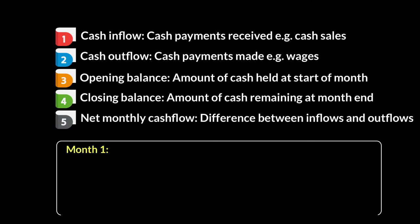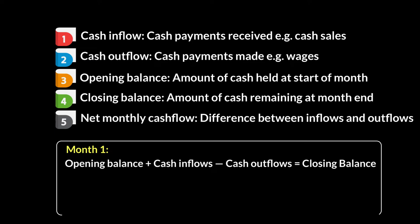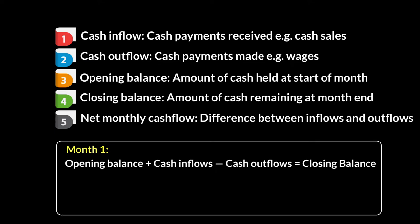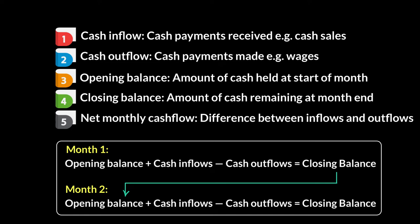Remember, these cash flow forecasts are made for a particular period — a month — so we'll consider it for month one. Opening balance plus cash inflows minus cash outflows will equal your closing balance. And as we've learned, the closing balance of one month then becomes the opening balance of the next month. So whatever this figure is — say it's 20 — then for month two, the opening balance becomes 20, and the same formula repeats: plus inflows minus outflows equals closing balance.